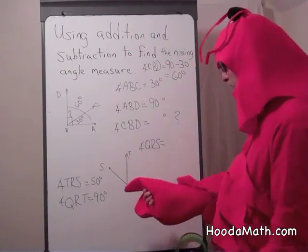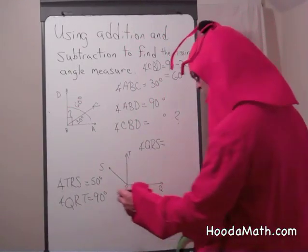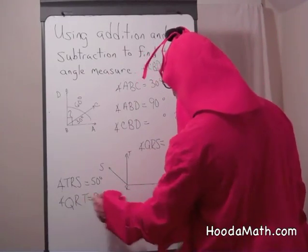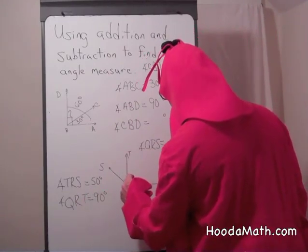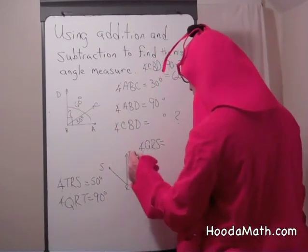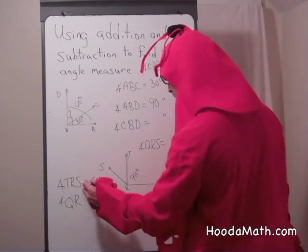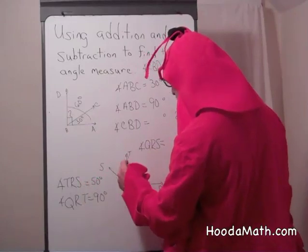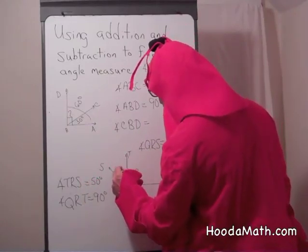Let's look here. We know angle QRT is 90 degrees, and we know angle TRS is 50 degrees.